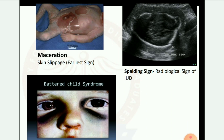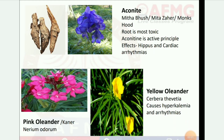Next image: battered child syndrome. Next: aconite — Mitha bish, Mitha zehar, monk's hood. Root is most toxic; aconitine is the active principle. Effects: hypotension and cardiac arrhythmias. Pink oleander: Caner nerium odorum. Yellow oleander: Thevetia peruviana — causes hyperkalemia and arrhythmias.